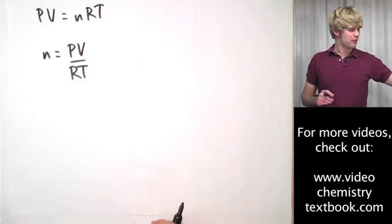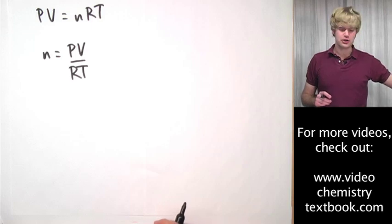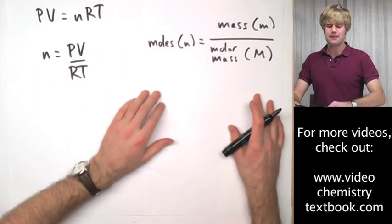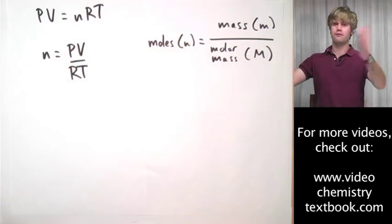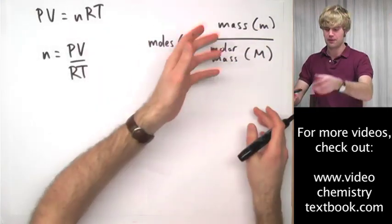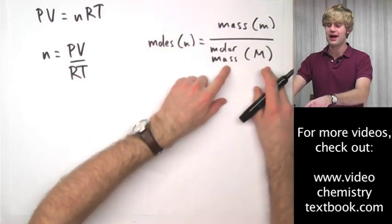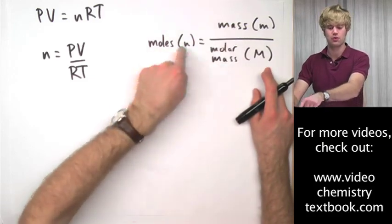The first thing that I want to do is I want to get molar mass into the equation. Remember that moles—in order to get moles, we take the mass of a sample, like 40 grams of a lump of carbon or something, and divide it by the molar mass in order to find out how many moles there are.